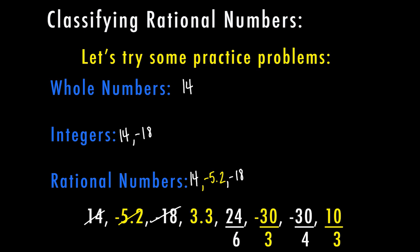Next, 3 and 3 tenths is a decimal and fits the A over B form, so it's just a rational number. Then we have 24 over 6 — if we divide 24 by 6 we get 4, so this reduces to 4. Since 4 is a whole number, it's also an integer and a rational number. Numbers like that can look tricky because they appear to be just a fraction, but simplifying them can place them in all three categories.